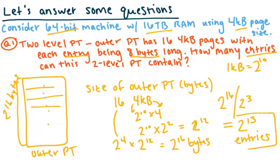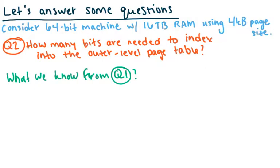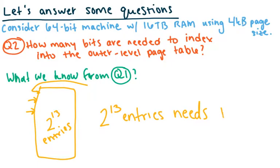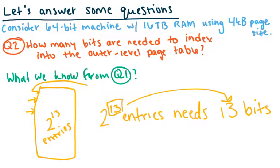The next question is: how many bits are needed to index into that outer-level page table? We know from the previous question that it has 2^13 entries. To index into 2^13 entries, we need 13 bits. You just take the exponent — that's the number of bits needed to represent that many entries.